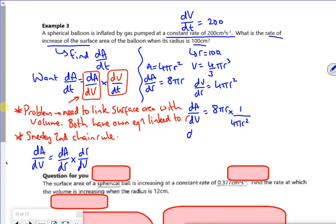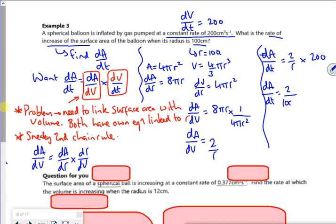So the π's cancel, the 8 and the 4 cancel, so it's going to be 2 over r. So now going back to my dA/dt, it's going to be 2 over r times by 200 when r is 100. So dA/dt is 2 over 100 times by 200, that's going to be 400 over 100, giving me 4.